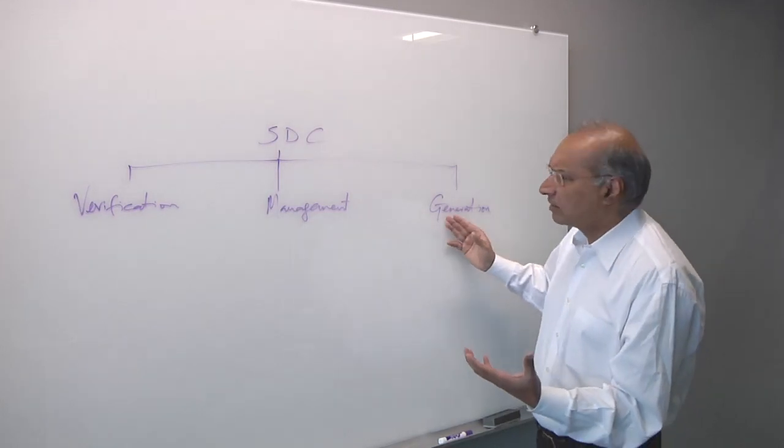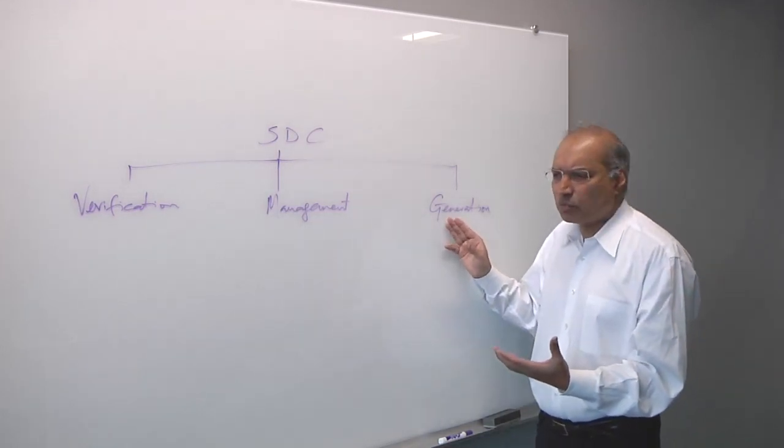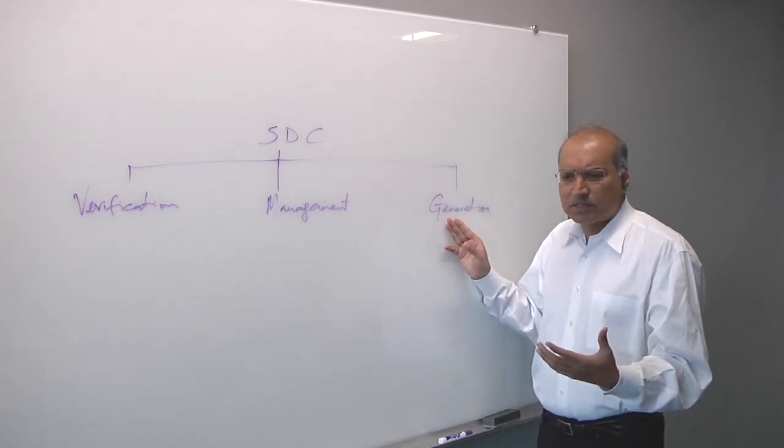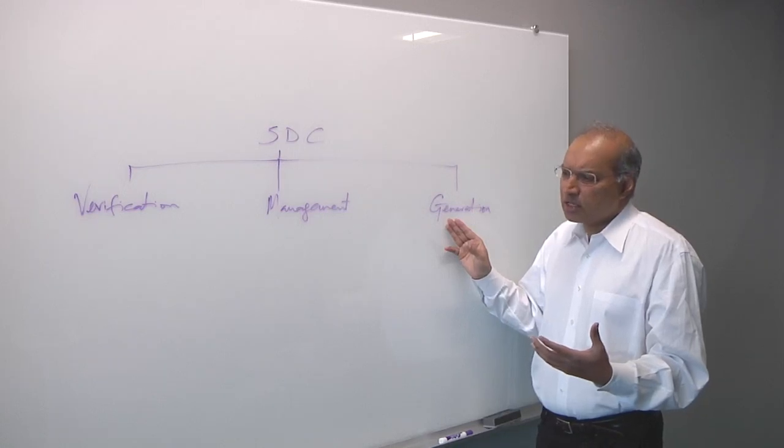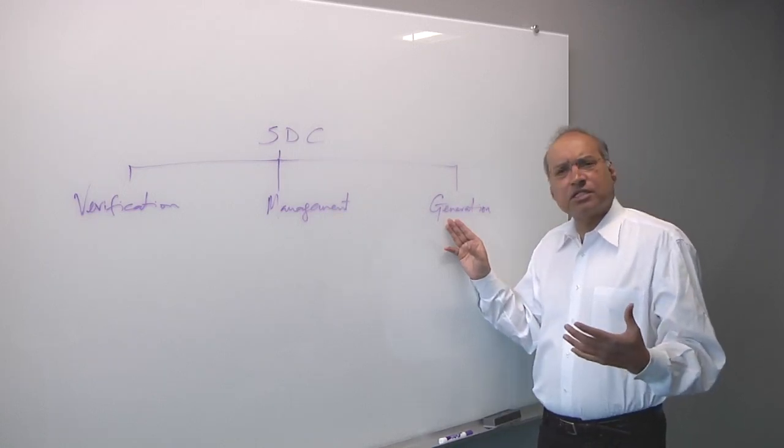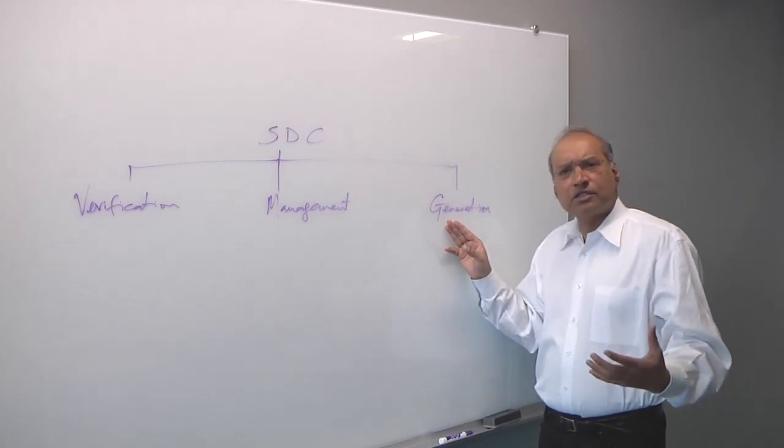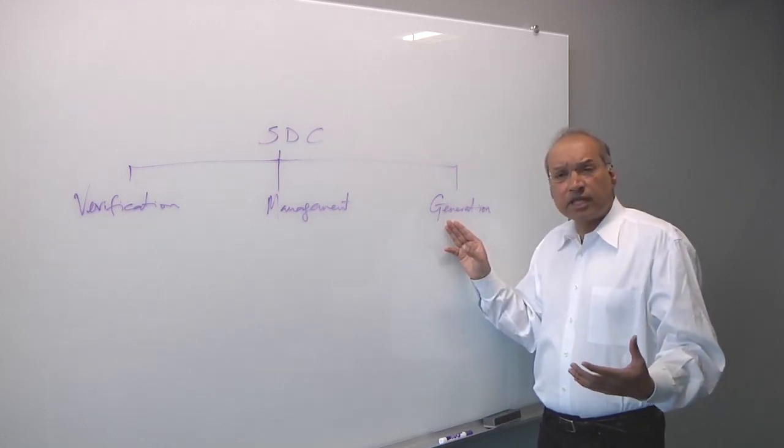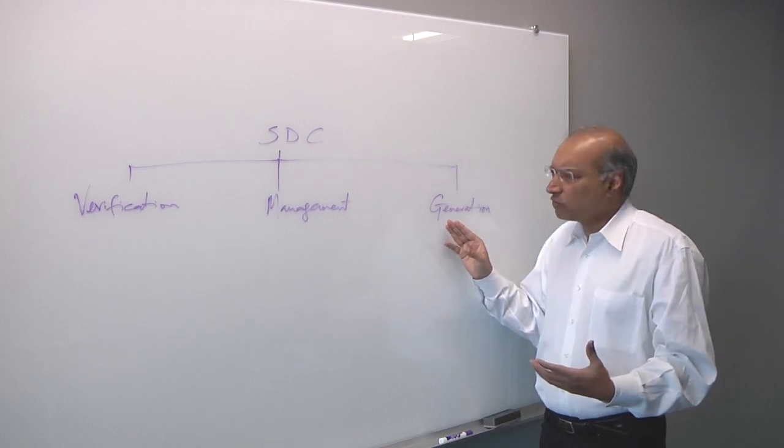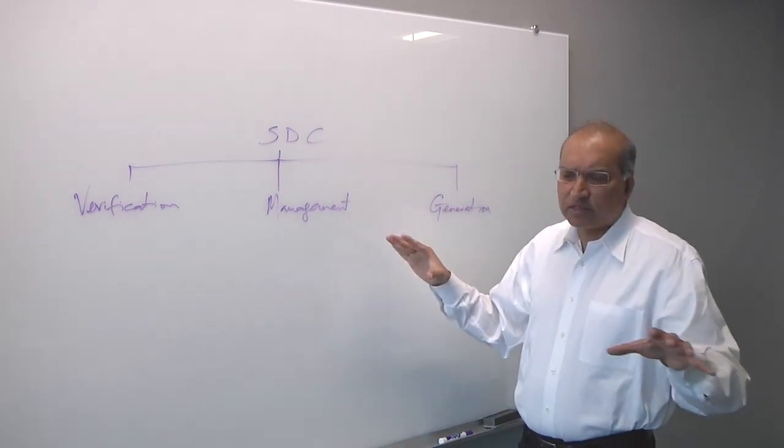So that's just one aspect of management. And then finally, the third piece is generation, where there are some teams and engineers who say, look, I've been burnt trying to write the SDC myself and making mistakes. So can you just take my RTL and create the constraints for me? So that's the generation aspect.